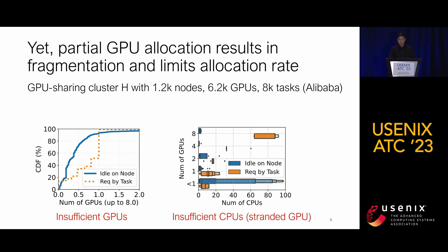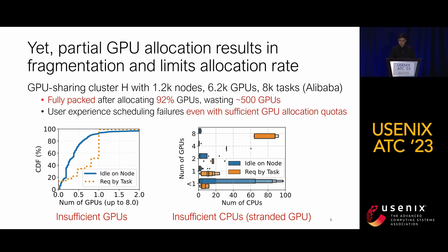The right figure illustrates the idle CPU distribution in blue and requested CPUs per task in orange, grouped by corresponding idle and requested GPUs along the Y-axis. We find that tasks requesting eight idle GPUs critically lack sufficient available CPUs. We refer to these as stranded GPUs — unable to schedule due to insufficient CPUs. Consequently, the cluster becomes fully allocated after assigning just 92% of GPUs, wasting 500 GPUs idle. We also observe user complaints about unexpected scheduling failures despite sufficient GPU quotas. Our work aims to address such fragmentation-induced resource underutilization.